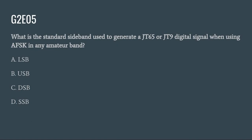G2E05: What is the standard sideband used to generate a JT65 or JT9 digital signal when using AFSK in any amateur band? A. Lower sideband. B. Upper sideband. C. DSB or DSSB. The correct answer is B: upper sideband, USB.